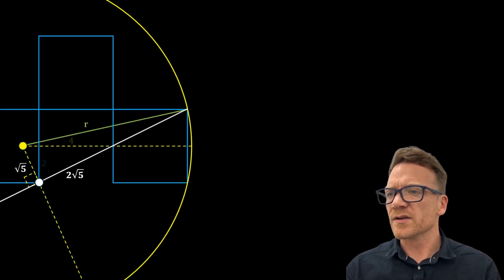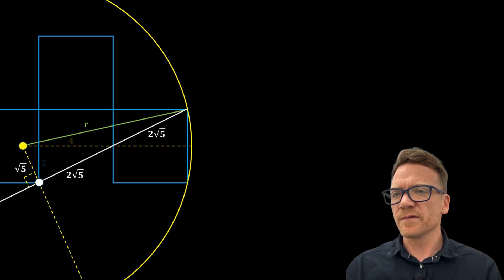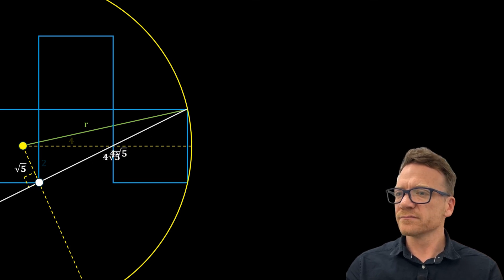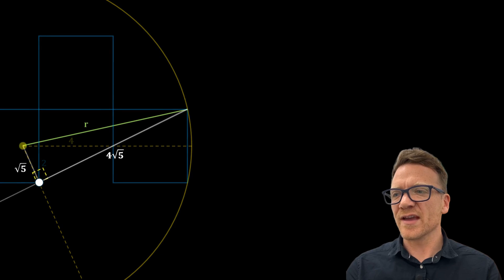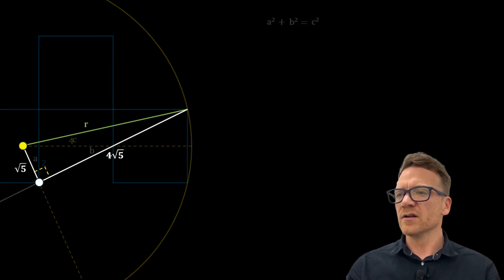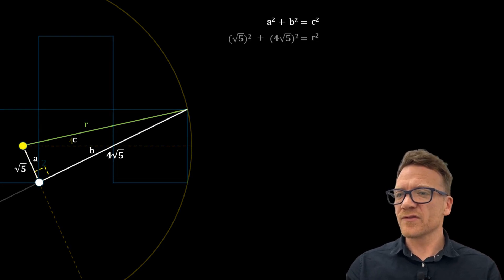All right, here we can double the length of half of the white chord, which is four square root five. And we now have another right angle triangle, where the radius is the hypotenuse, and we can use Pythagoras again to solve for r. The radius is equal to square root five squared plus four square root five squared, and this simplifies to five plus eighty, which is eighty-five.